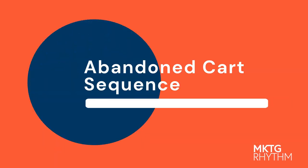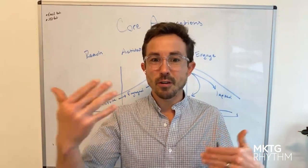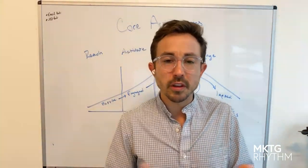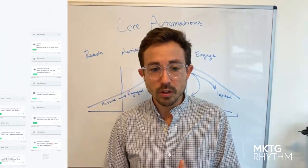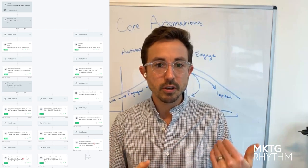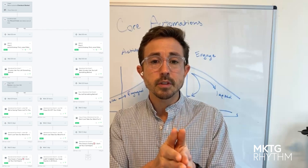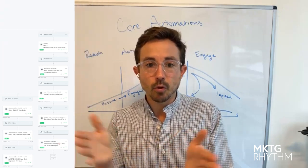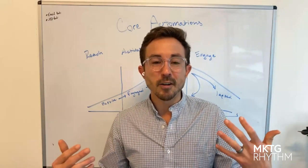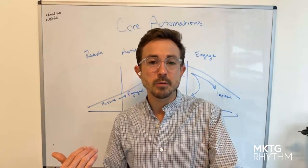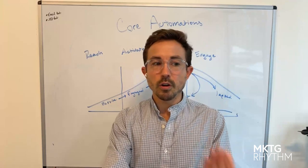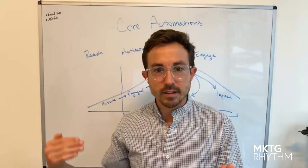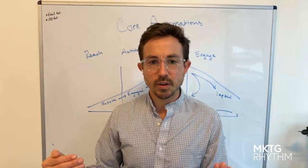The next email sequence is the abandoned cart. Everyone thinks about this — Shopify offers one natively as an integration — but we like to do more. We like to send a good number of emails in our abandoned cart and change it up enough. We like to segment based on somebody who's purchased zero times versus somebody who's purchased multiple times, because a repeat customer probably doesn't need an offer. They may be a little bit easier to convert since they've experienced your product, not just your marketing.